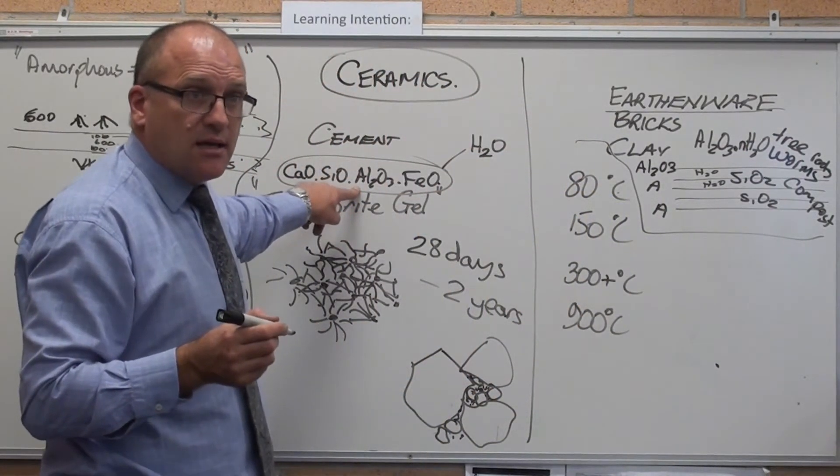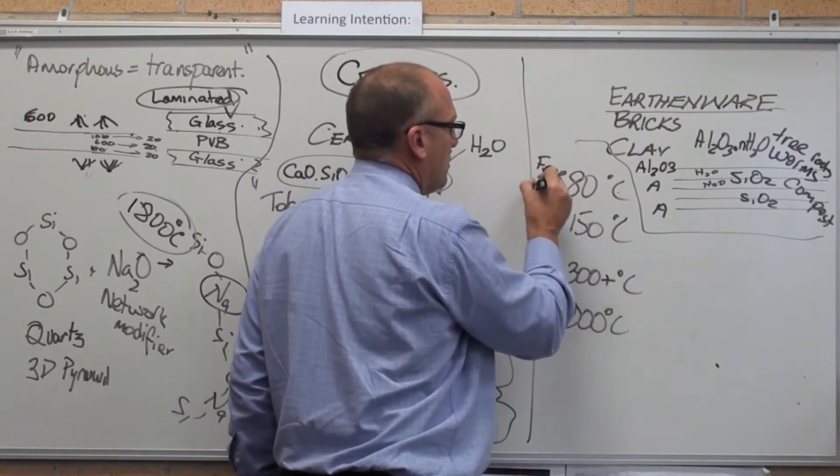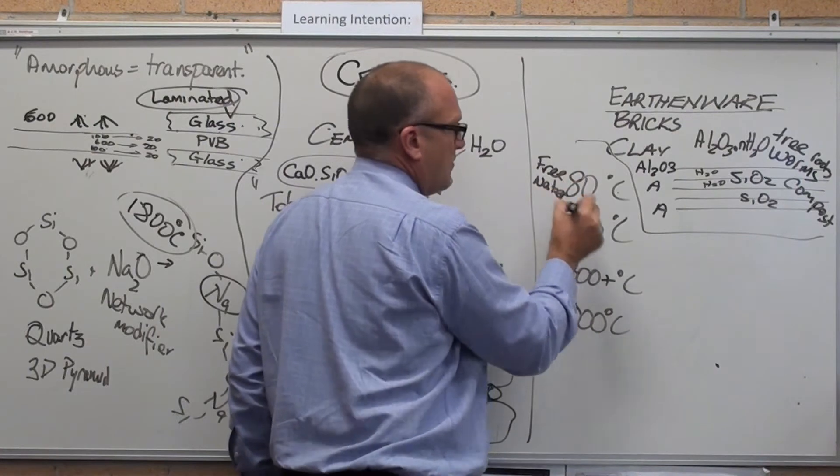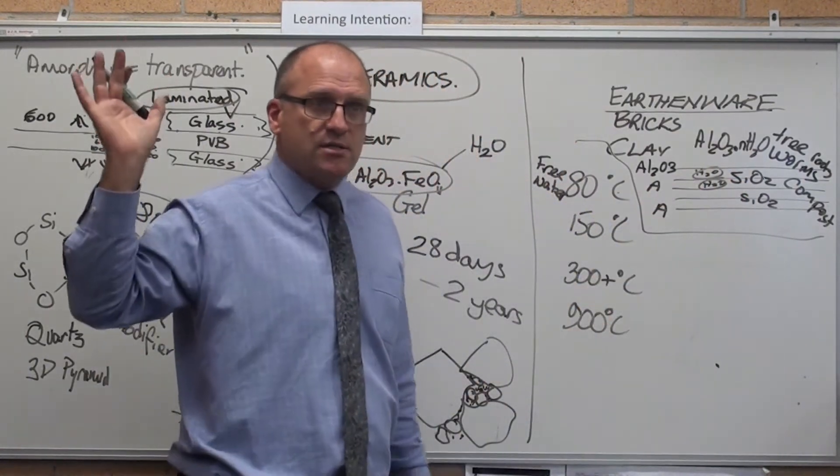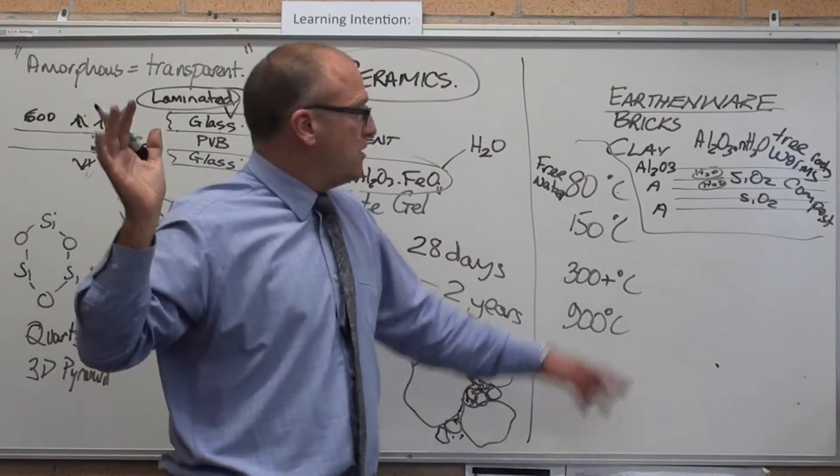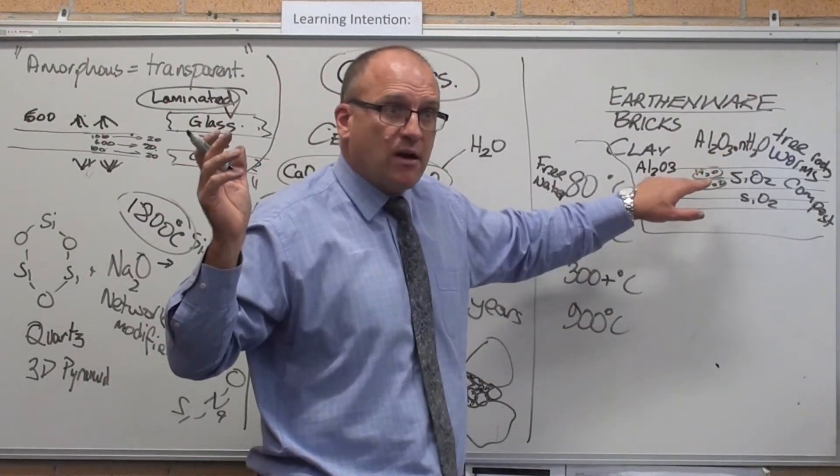When I put this thing in a kiln, 80 degrees, the free water disappears. All this water between the sheets just boils off and evaporates. The chemically bound water still stays, but the free water evaporates.